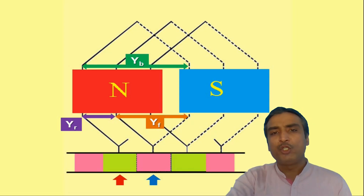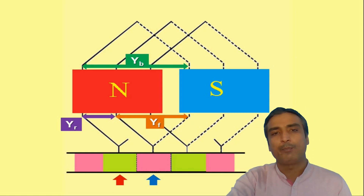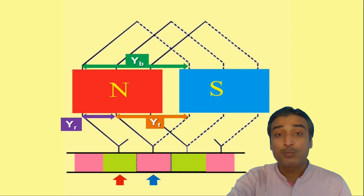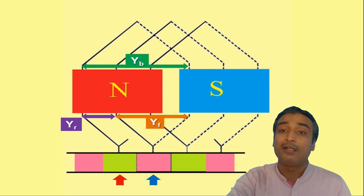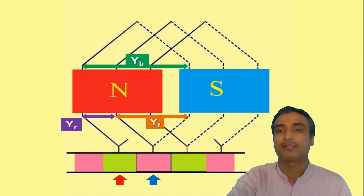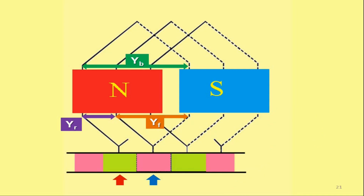Although we made use of the number of armature slots for defining the back pitch, front pitch, and resultant pitch, these pitch definitions can also be stated in terms of armature conductors. Another important term is commutator pitch, defined in terms of the number of commutator segments. It is the distance between the commutator segments to which the two ends of a coil are connected, and is generally denoted by YC.